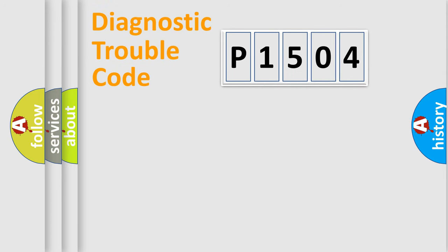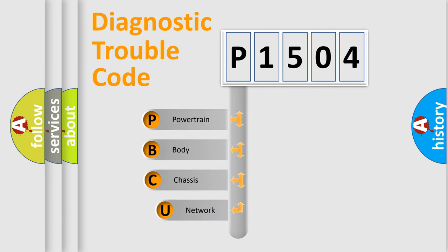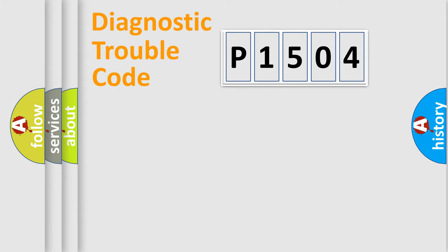Let's do this. First, let's look at the history of diagnostic fault code composition according to the OBD2 protocol, which is unified for all automakers since 2000. We divide the electric system of an automobile into four basic units: Powertrain, Body, Chassis, and Network.